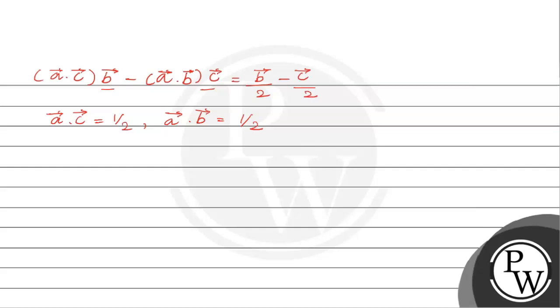So from here we got a·c value and a·b value. And in the question we are also given the information that b·d = a·b. So the value of b·d will also be equal to 1/2. And it is given b·c = 0. Now we will use this to simplify the given question.